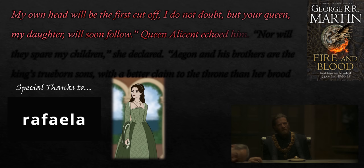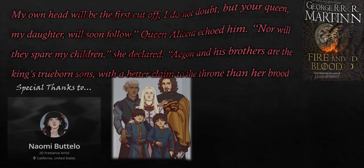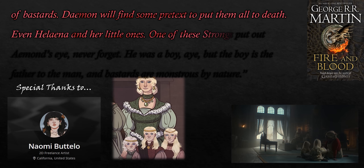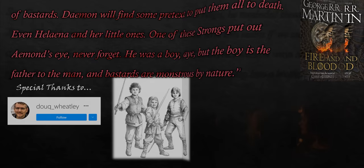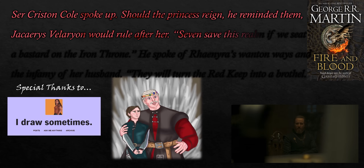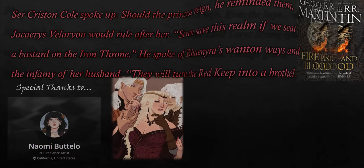Ser Otto reminded them that Rhaenyra's husband was none other than Prince Daemon, and said: 'Should Rhaenyra ever sit the Iron Throne, it will be Lord Fleabottom who rules us — a king consort as cruel and unforgiving as Maegor ever was. My own head will be the first cut off, I do not doubt, but your queen, my daughter, will soon follow.' Queen Alicent echoed him: 'Nor will they spare my children. Aegon and his brothers are the king's trueborn sons with a better claim to the throne than her brood of bastards. Daemon will find some pretext to put them all to death — even Helaena and her little ones. One of these Strongs put out Aemond's eye, never forget.' Ser Criston Cole spoke up: should the princess reign, Jacaerys Velaryon would rule after her. 'Seven save this realm if we seat a bastard on the Iron Throne.' He spoke of Rhaenyra's wanton ways and the infamy of her husband.